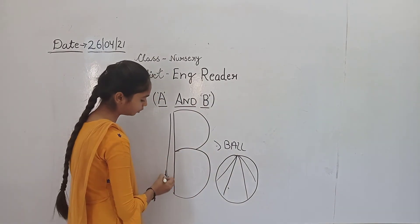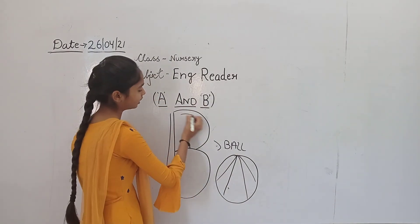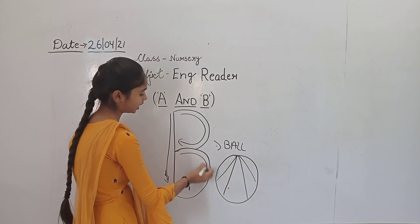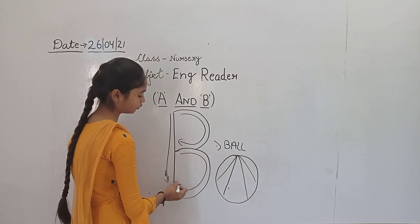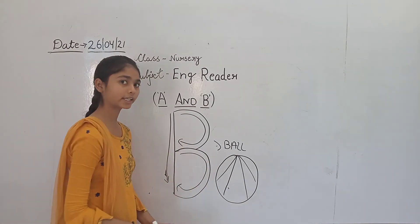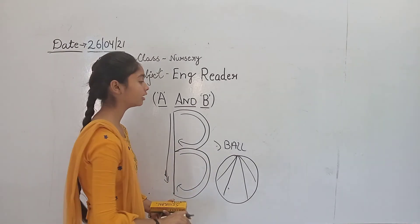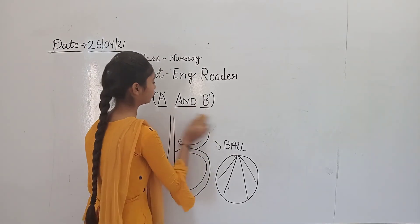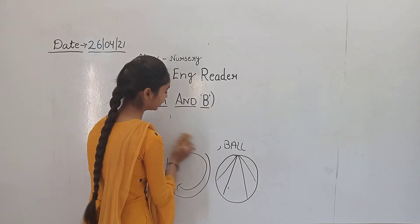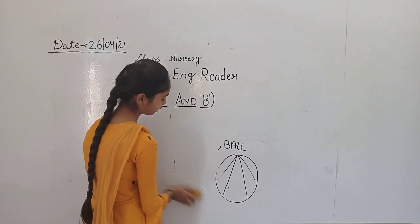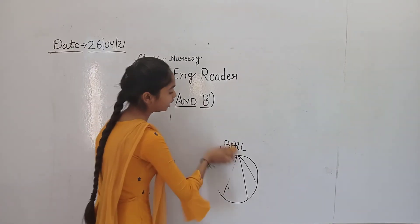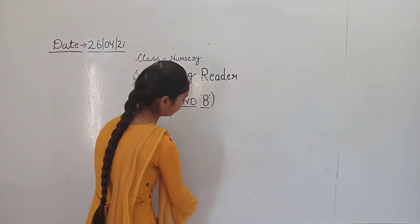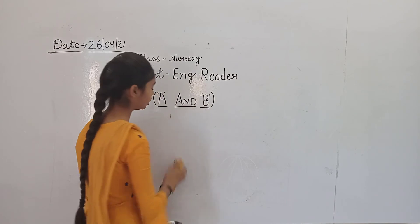Again, this is our slanty line. This is cut. Again, this is our slanty line. Again, this is our slanty line. B for ball. What can we learn? A for apple, B for ball.